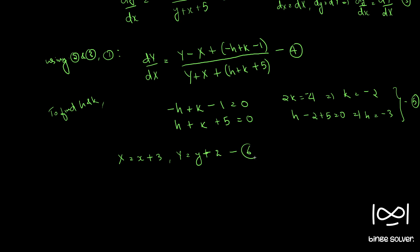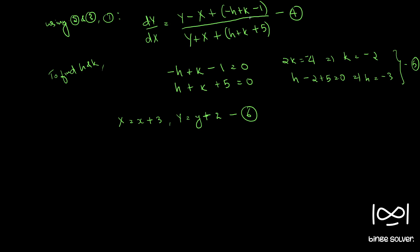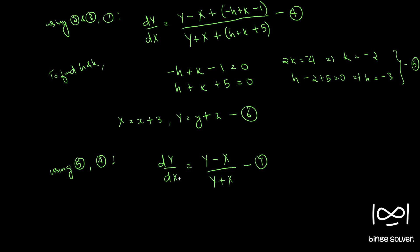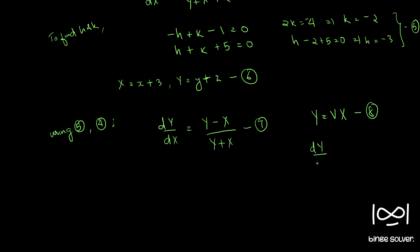Let's call these equation 6 — we will use these values later in the solution. Using equation 5, the values of h and k, and plugging into equation 4, we get dY by dX equal to (Y minus X) by (Y plus X). This is now a homogeneous equation — call this equation 7. To solve such a homogeneous equation, we use the substitution Y equal to vX — call this equation 8.